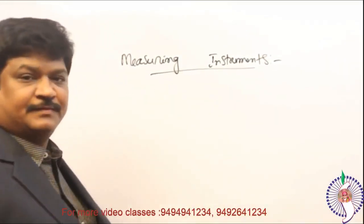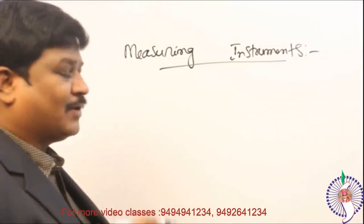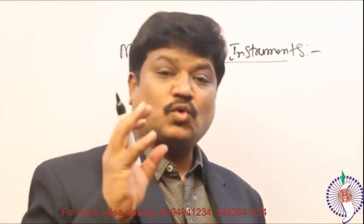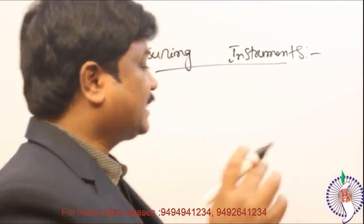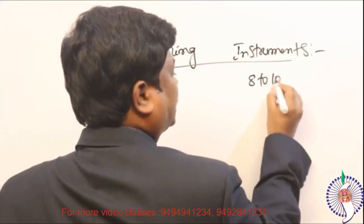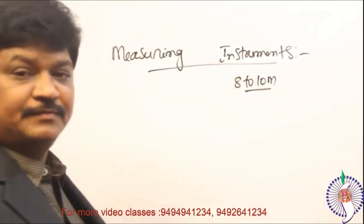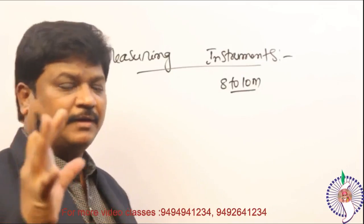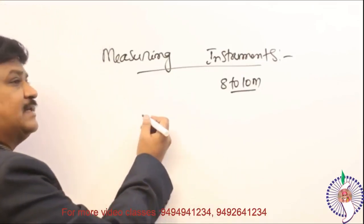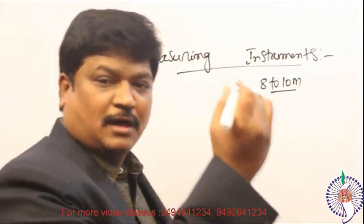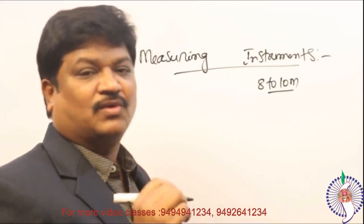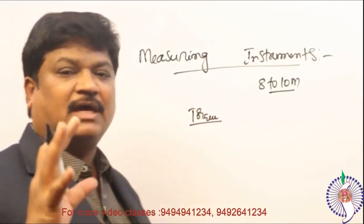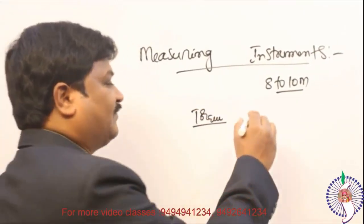The next topic is measuring instruments — an easy and good-scoring subject. Expect nearly 8 to 10 marks from this topic. The basic terminology includes deflecting torque, controlling torque, and damping torque. In damping torque: air-frictional damping, fluid-frictional damping, and eddy-current damping. Know which instrument uses which type of damping — for example, PMMC uses eddy-current damping, hot-wire instruments use air-frictional damping. Also know the difference between over-damped, under-damped, and critically damped conditions, and which is the best damping condition.